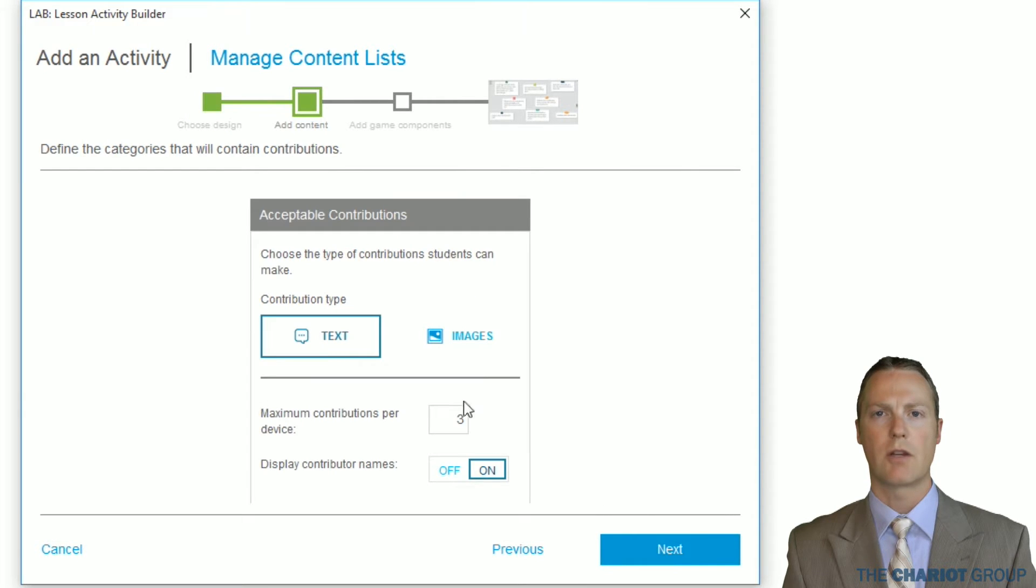In this section, we will choose the contribution type. We can choose text or images. In this case, we will choose text. We can also choose to limit the number of contributions per device and whether or not to display the students' names by default. Then we click Next.